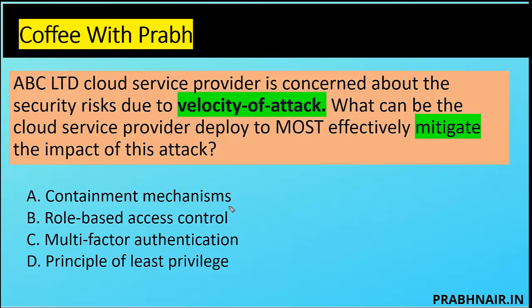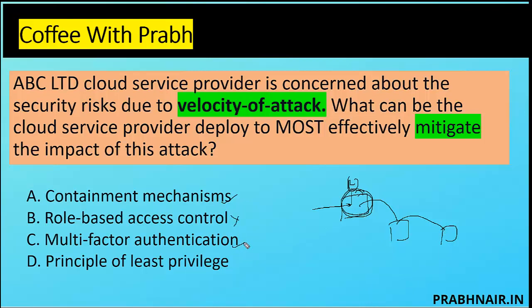Option B is role-based access control — not effective, because if system A is infected, the attacker may take over the current role-based function, exploit at a higher level with admin privilege, and then move laterally to other systems. Velocity means amplification, so RBAC is not the answer. Option C is multi-factor authentication — it can act as a preventative control, but if it's a memory-based attack, MFA cannot be achieved, so C is also removed.